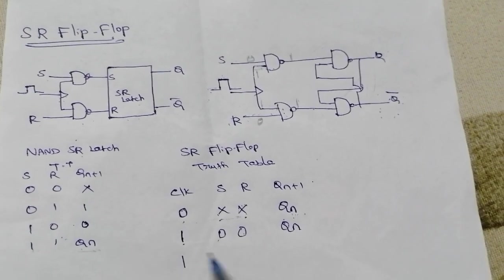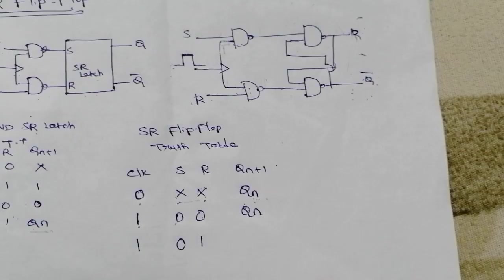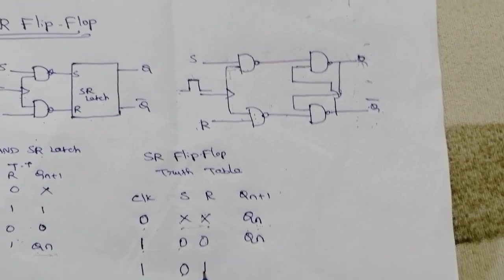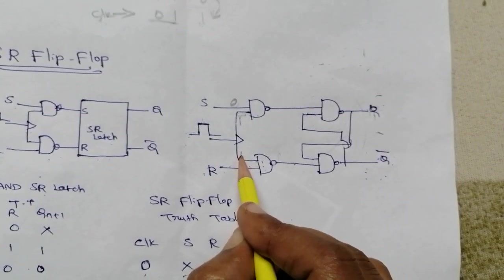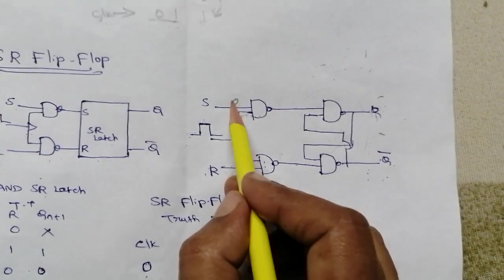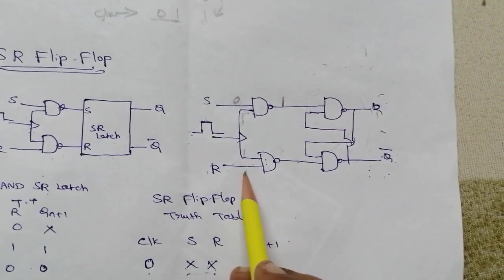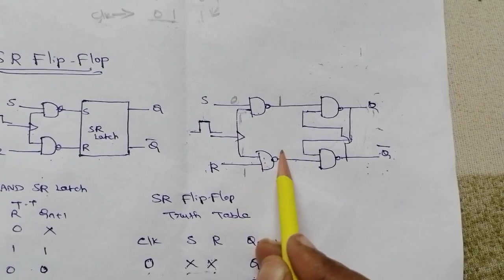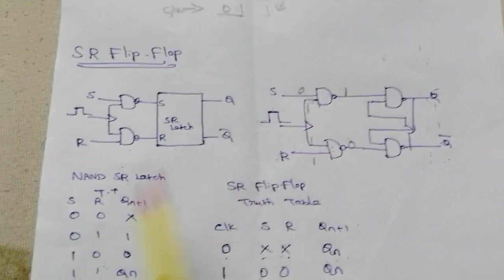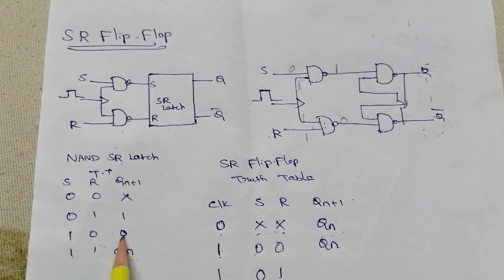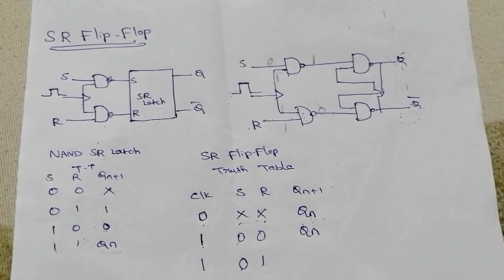Next, with clock=1 and S=0, R=1: the NAND gate with S=0 and clock=1 gives output 1, while the gate with R=1 and clock=1 gives output 0. So the inputs to the NAND SR latch are 1 and 0. From the NAND SR latch truth table, a 1-0 input combination gives output Q=0. This is the reset state.